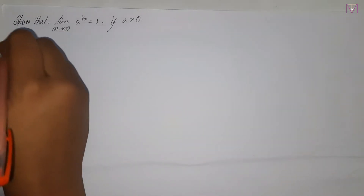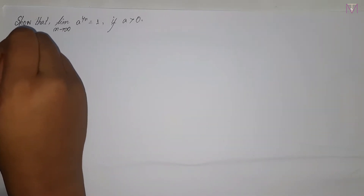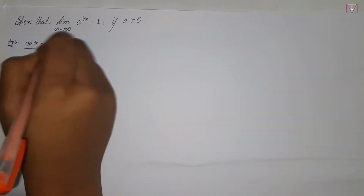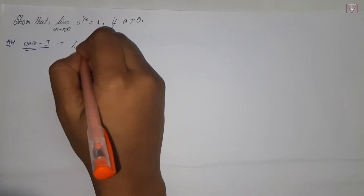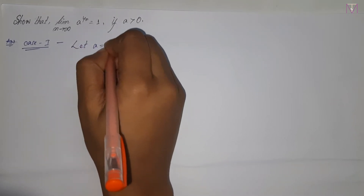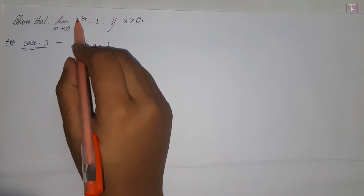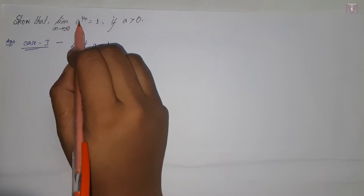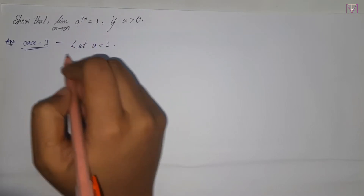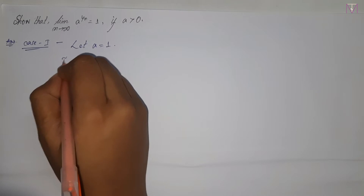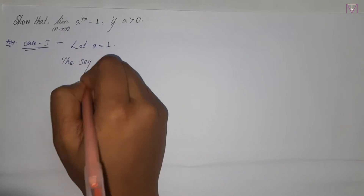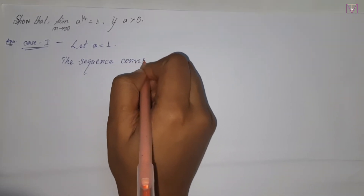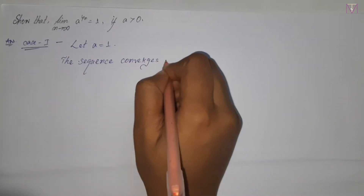We shall consider three cases. First case: let a equal to 1. If a is equal to 1, then we get the limit as n tends to infinity of 1 to the power 1 by n is equal to 1. So the sequence converges to 1.